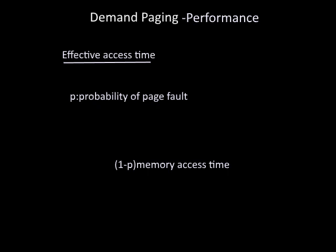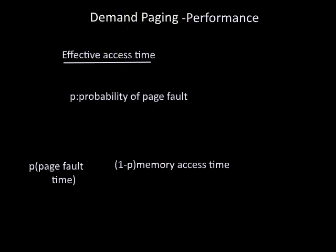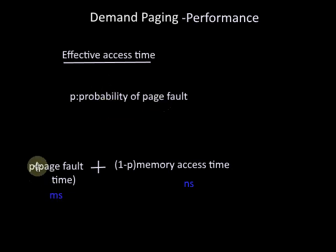So if p is the probability of a page fault, the effective access time of demand paging is: p × page_fault_time + (1-p) × memory_access_time. The memory access time is always in nanoseconds, but the page fault time is in milliseconds. If the probability of a page fault is high, the page fault time increases and hence the effective access time increases. Thus, effective access time is directly proportional to the page fault rate.